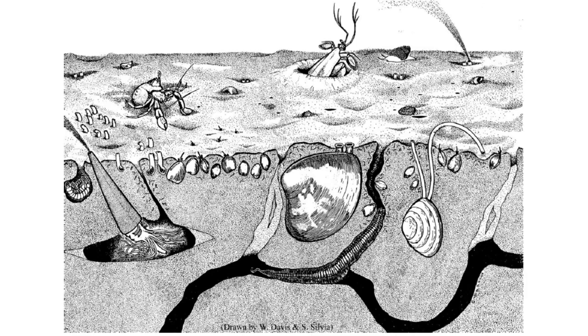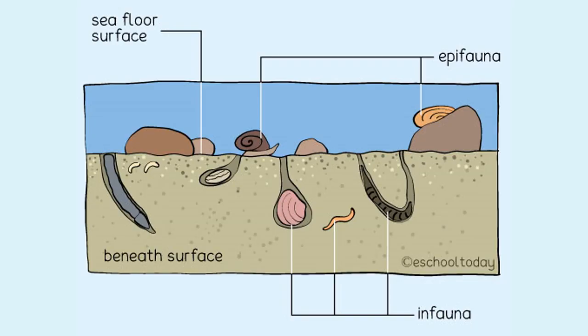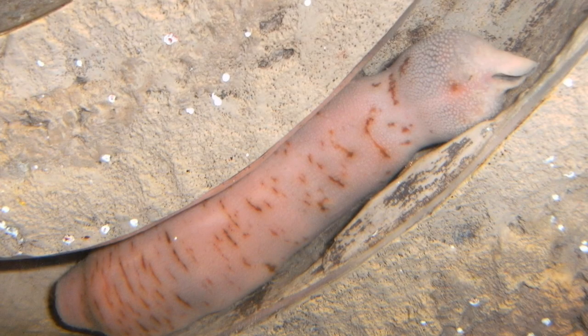Benthic organisms make up the benthos beneath the nekton and plankton. We can also recognize different types of benthic organisms. Some organisms live on top of the seafloor while others live beneath it — those that live beneath it are called infaunal. Infaunal organisms spend their lives surrounded by sediment, and include many worms, clams, brachiopods, and other types of animals and protists.